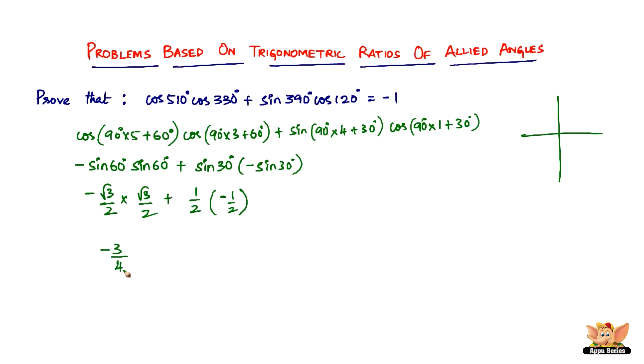-3/4 plus -1/4 equals -4/4, which is equal to -1. Hence proved. We proved that cos 510° × cos 330° + sin 390° × cos 120° = -1.